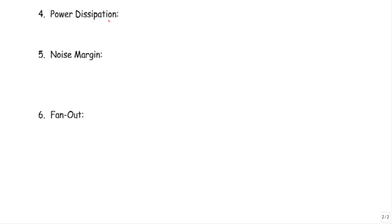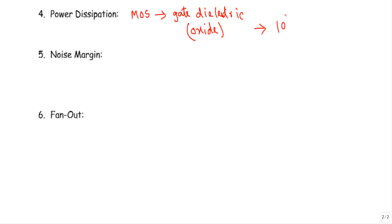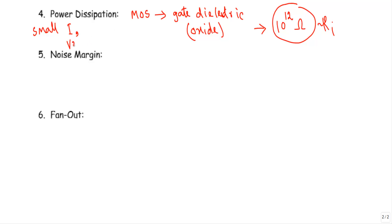The fourth characteristic is power dissipation — the amount of power drawn by the logic circuit from the source to perform the desired logical operation. MOS devices use a gate dielectric or oxide layer, which gives MOS devices a very high input resistance on the order of 10 to the power of 12 ohms. Because of this very high input resistance, a very small current flows at the input side, meaning MOS devices consume very low power for logical operation.